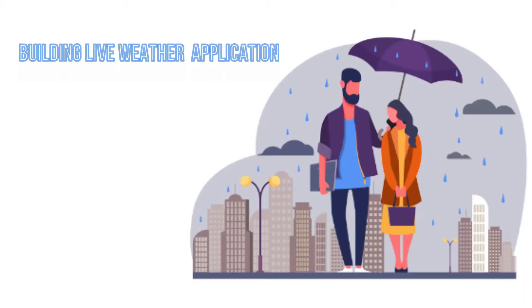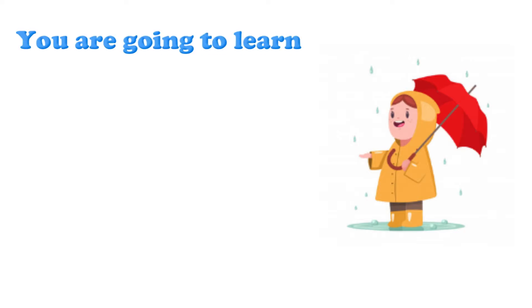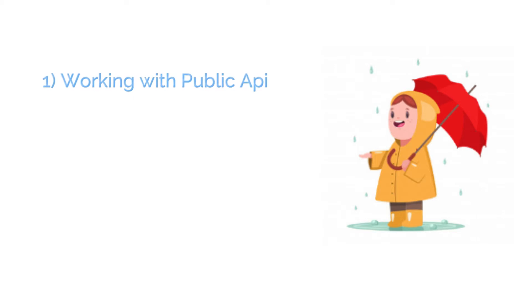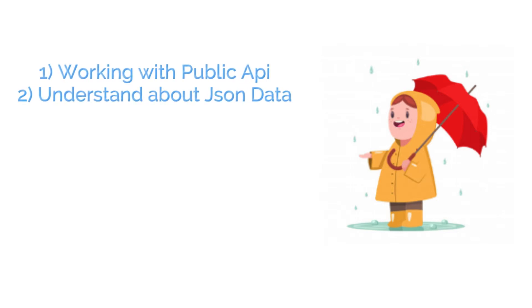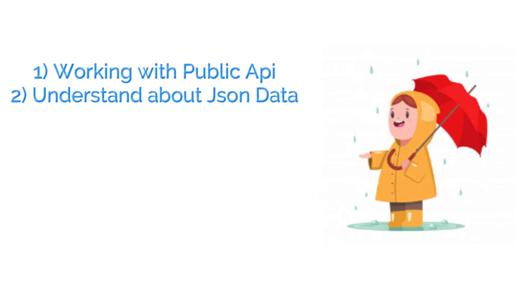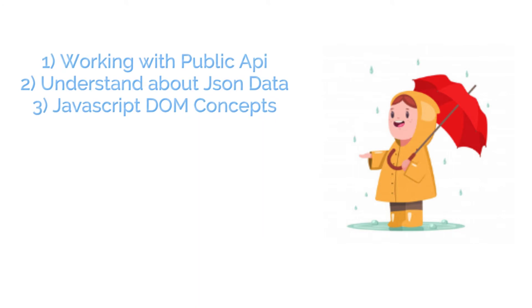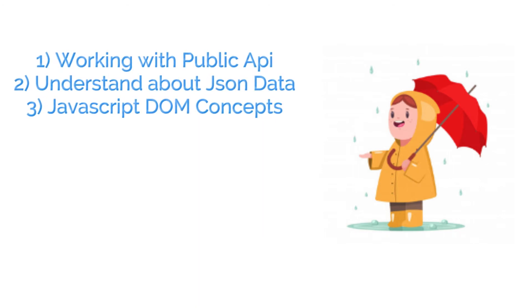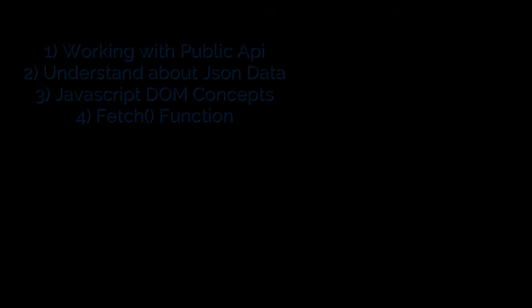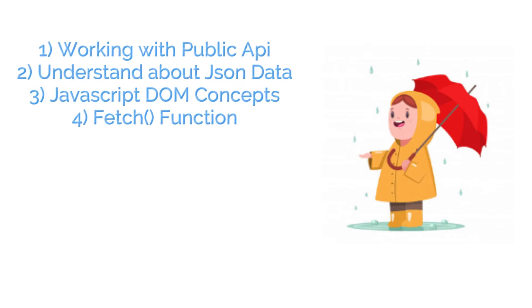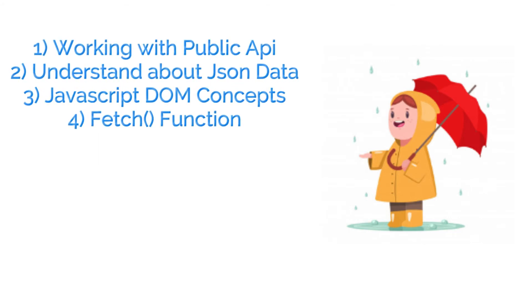In this class, you are going to build a live weather application. You are going to learn mainly how we can work with public APIs and API keys. You will understand the JSON data format and how to work with JSON. You will broadly understand JavaScript Document Object Model concepts and manipulations, and learn about the fetch function in detail and how it is used.